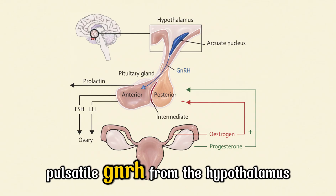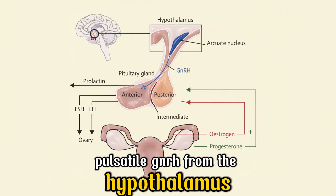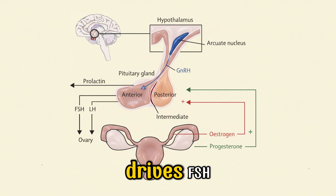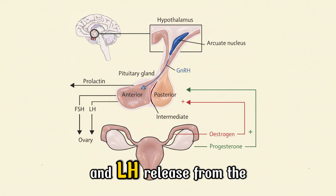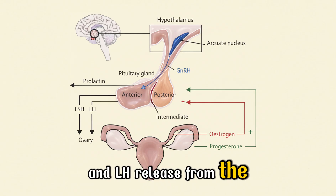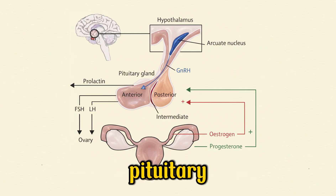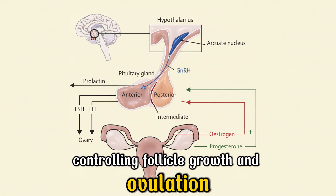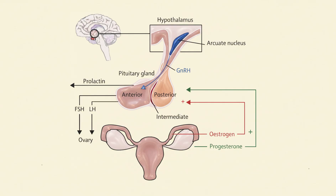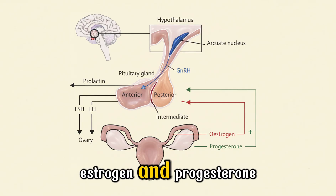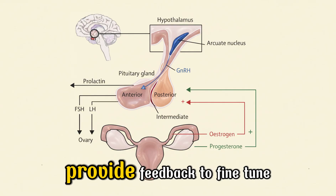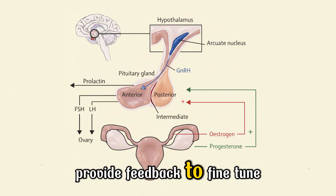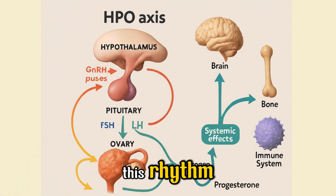Pulsatile GnRH from the hypothalamus drives FSH and LH release from the pituitary, controlling follicle growth and ovulation. Estrogen and progesterone provide feedback to fine-tune this rhythm.